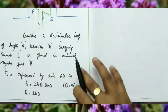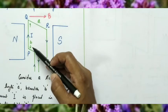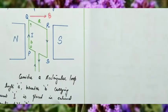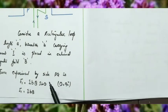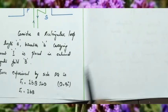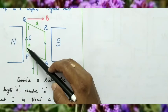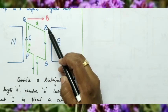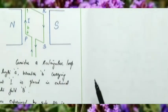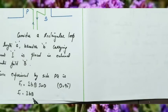Side PQ is a conductor carrying current I of length B placed in external magnetic field B. So it experiences a force F1 equal to IBB sinθ. The angle θ is between the direction of current and the magnetic field. Since they are perpendicular, θ equals 90°, therefore the force on side PQ is F1 equal to IBB.